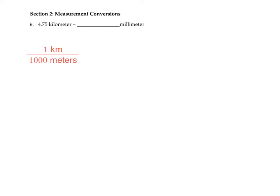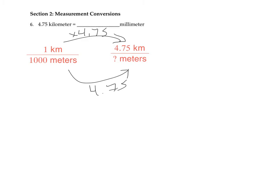Now we're looking at measurement conversions. Students should have a conversion sheet for these problems. First problem: we know 1 kilometer is 1,000 meters, but we have 4.75 kilometers. To get from 1 kilometer to 4.75, we multiply by 4.75, so we do the same to the meters. Multiplying by 1,000 moves the decimal three places, so this gives us 4,750 meters.